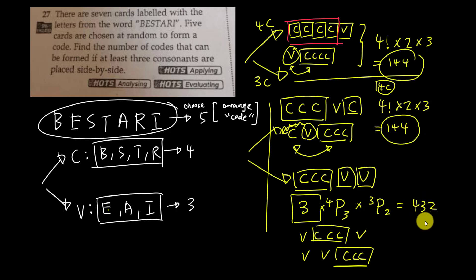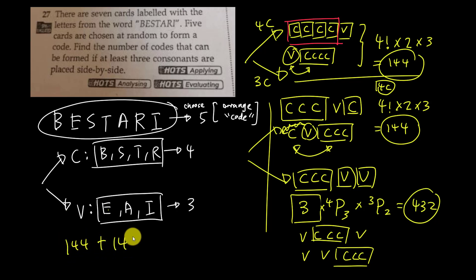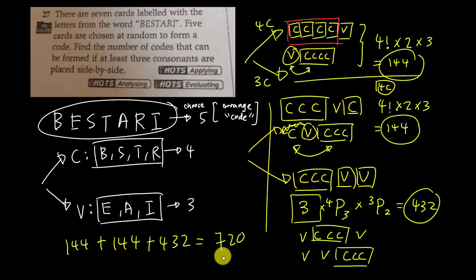So we add all the cases: 144 + 144 + 432 = 720. This is the final answer for this K-Bart permutation question. I hope you find this video useful, especially for this kind of question.